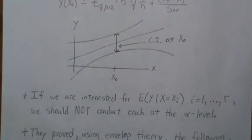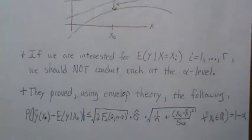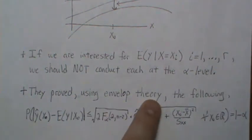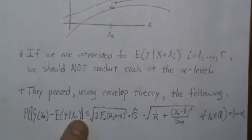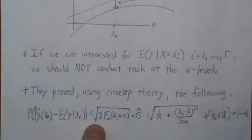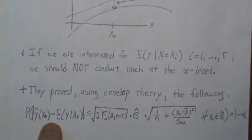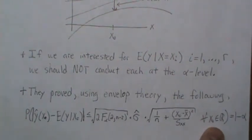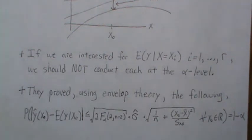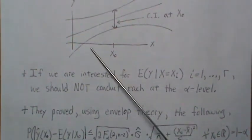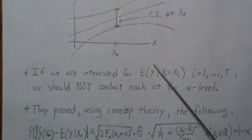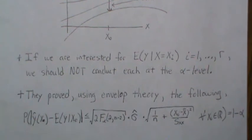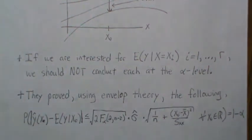What Working and Hoteling proved using envelope theory is this: the probability that the absolute value of this difference ŷ(x) - E(Y|X=x) is less than this quantity for any x you pick is one minus alpha. So no matter how many points you pick, the experiment-wise error rate will always be maintained at the one minus alpha level.